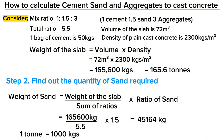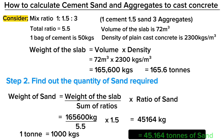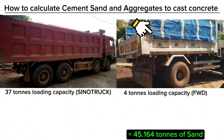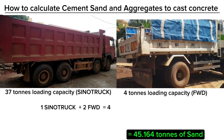One ton is equal to 1,000 kilograms, meaning this is 45.164 tons. A 12-tire sino-truck has a loading capacity of 37 tons, whereas one forward truck has a loading capacity of 4 tons, meaning we purchase one sino-truck and two forward trucks making a total of 45 tons, which is approximately the quantity of sand that we need.